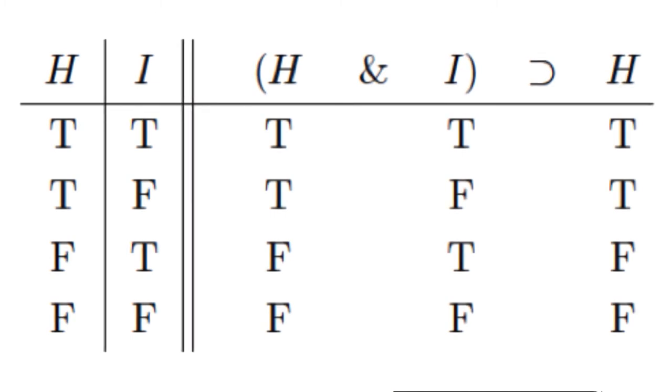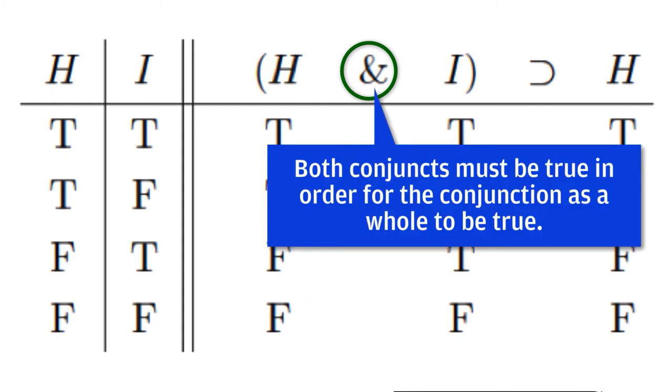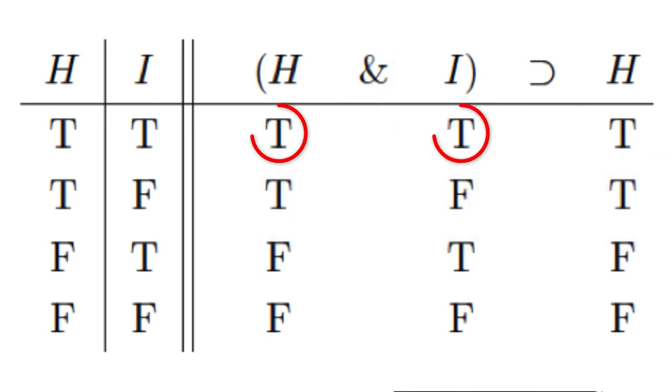We now need to complete the truth table by filling in the truth values for the connectives, albeit in the proper order. Since the horseshoe represents the main connective, we'll handle that last. We'll start with the sub-sentence H and I that uses the ampersand since it's the connective used in the antecedent of the conditional and therefore has a smaller scope than the main connective, the horseshoe. We'll apply the rule for conjunction, which states that both conjuncts must be true in order for the conjunction as a whole to be true. That situation exists only in the first row, so we'll place a T beneath the ampersand in the first row and F's in each subsequent row, like this.